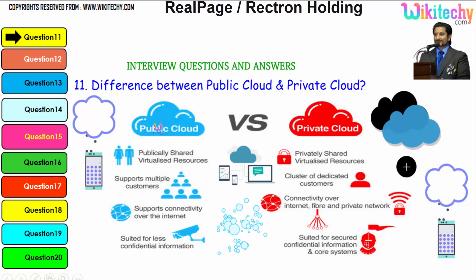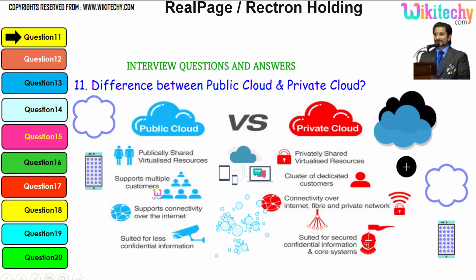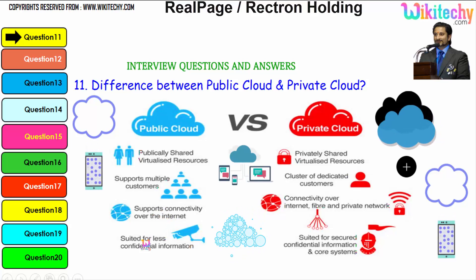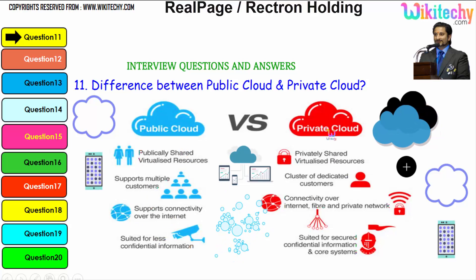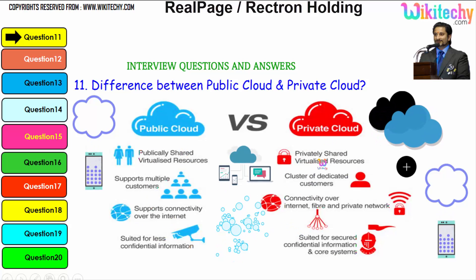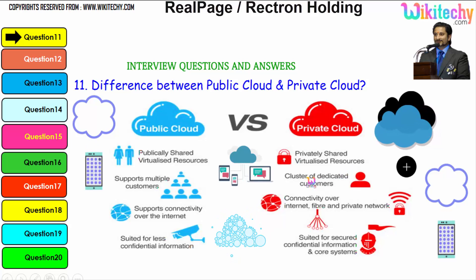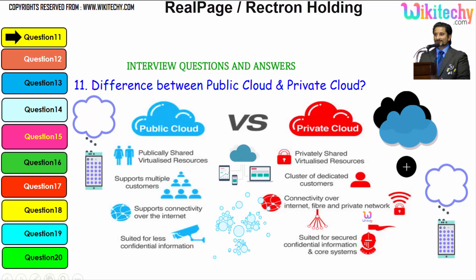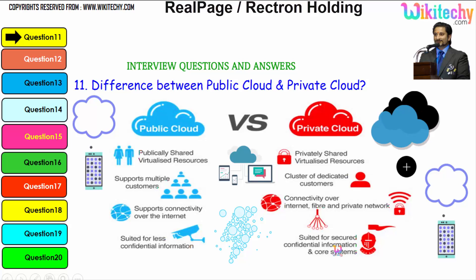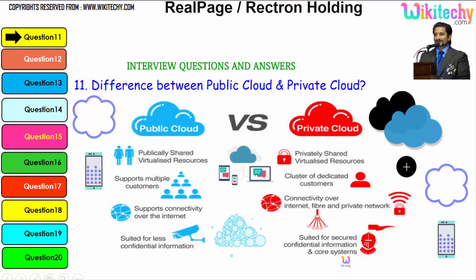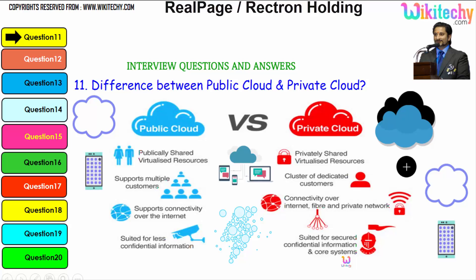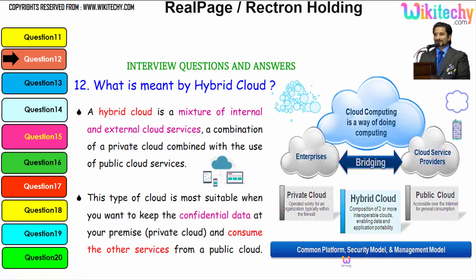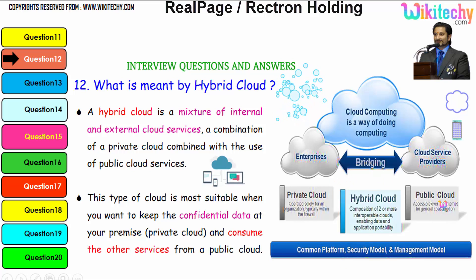The public cloud uses publicly shared virtual resources and supports multiple customers, supports connecting over the internet, and is suited for less confidential information. The hybrid cloud acts as a bridge between the private and public cloud.